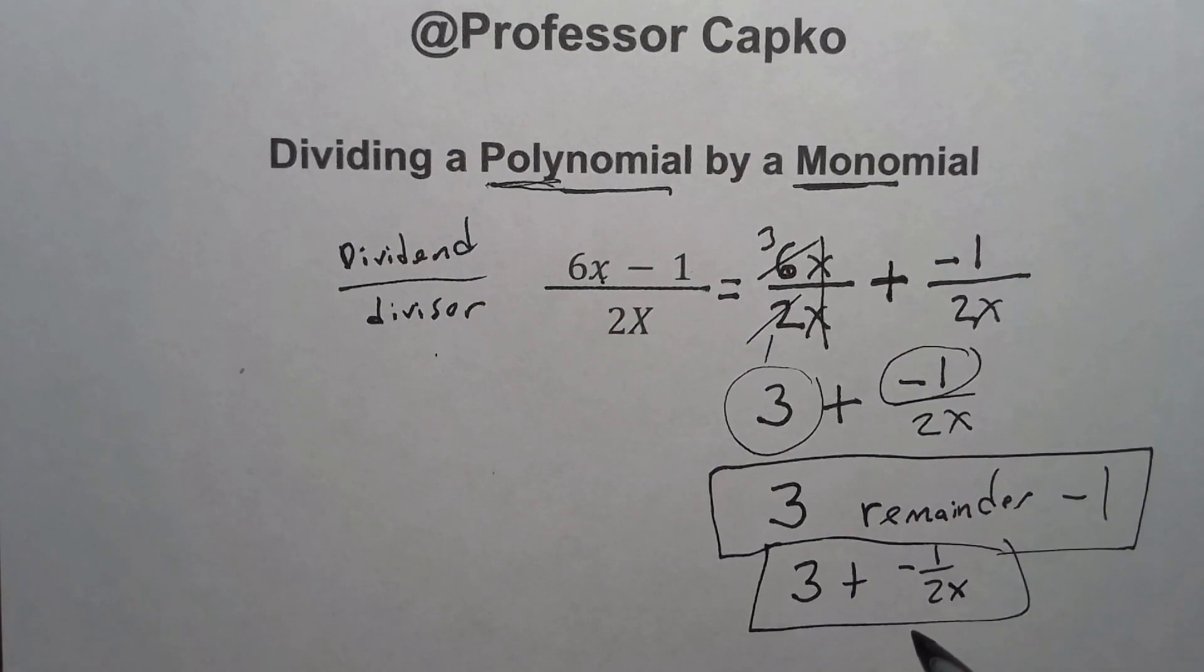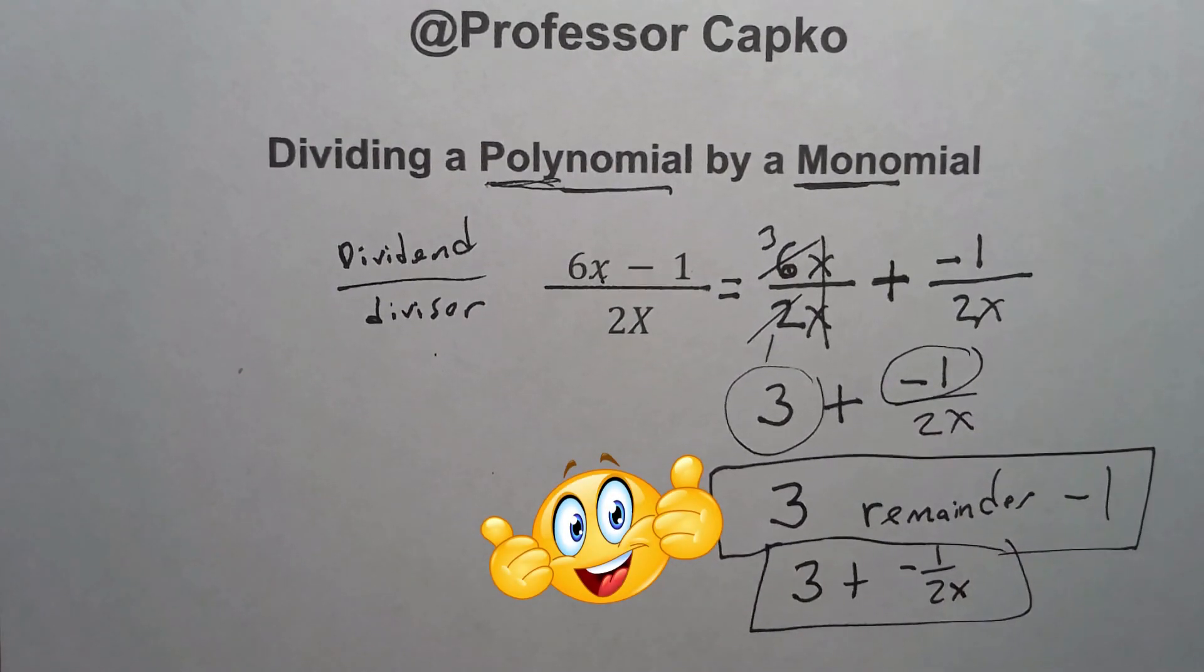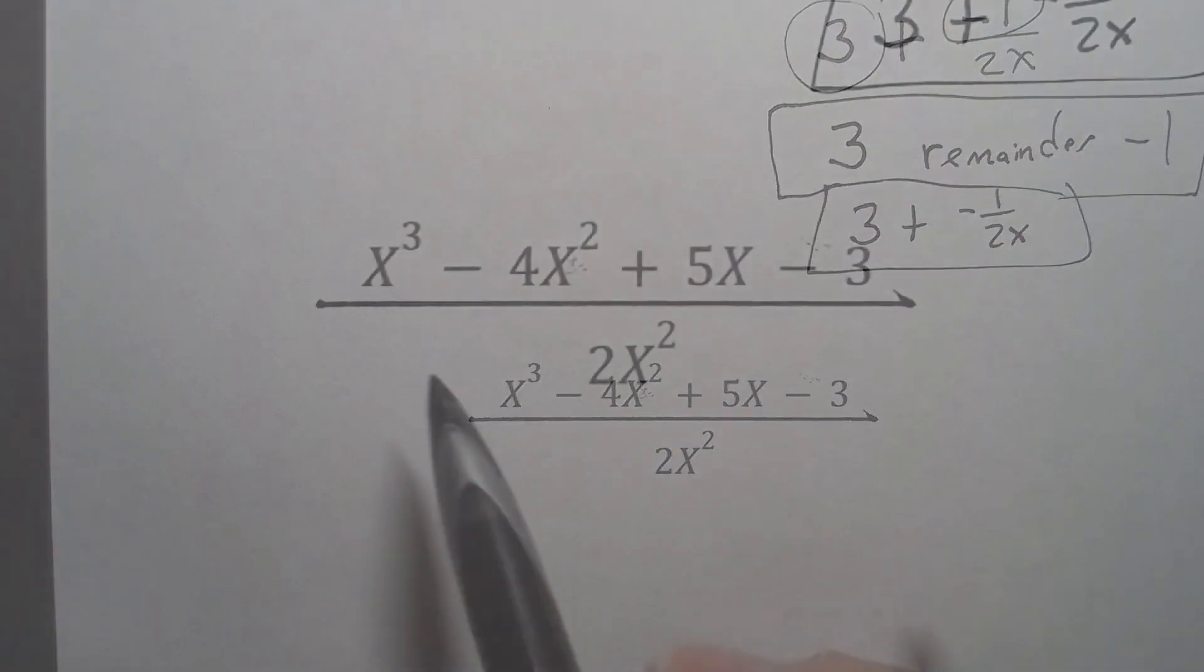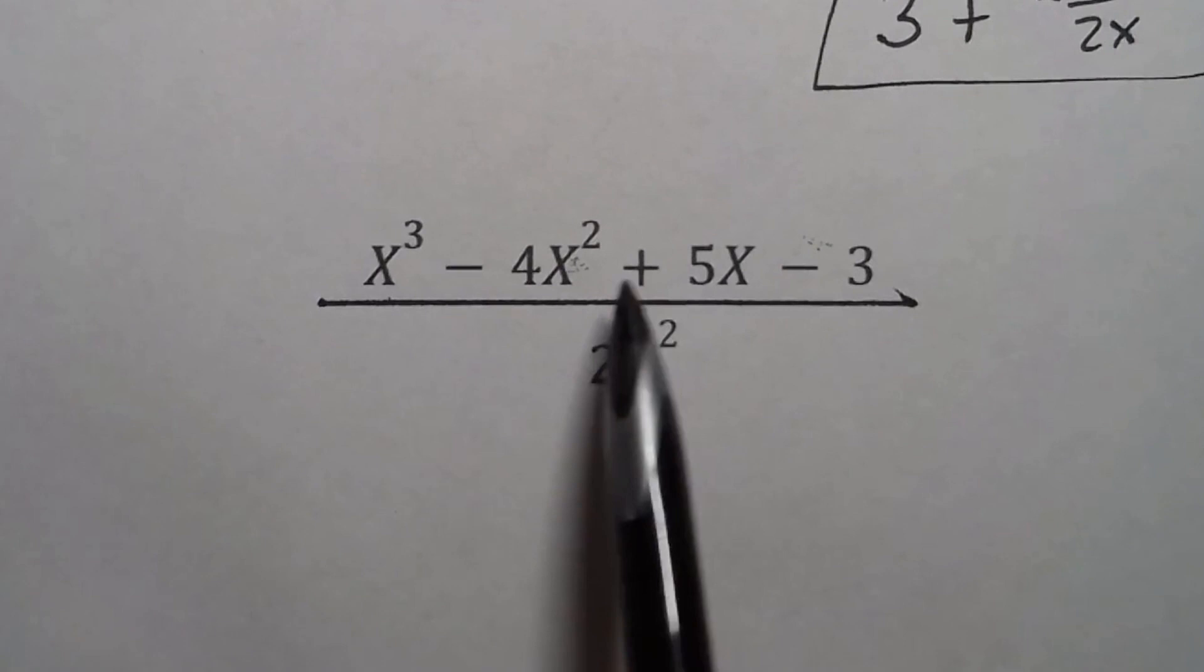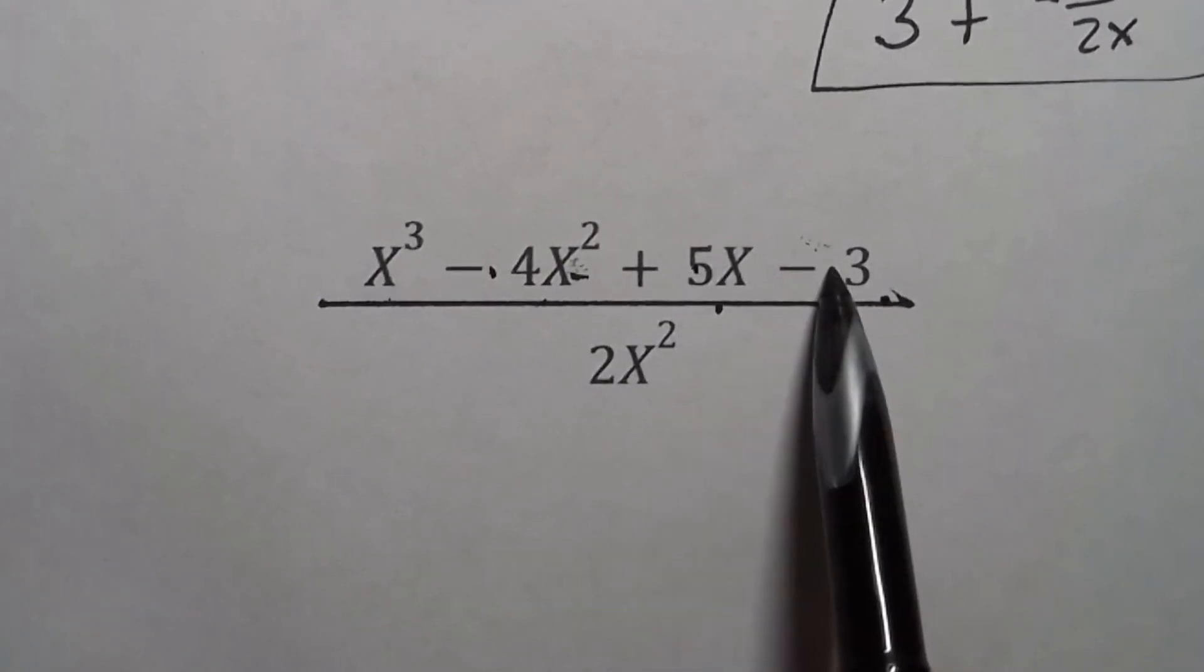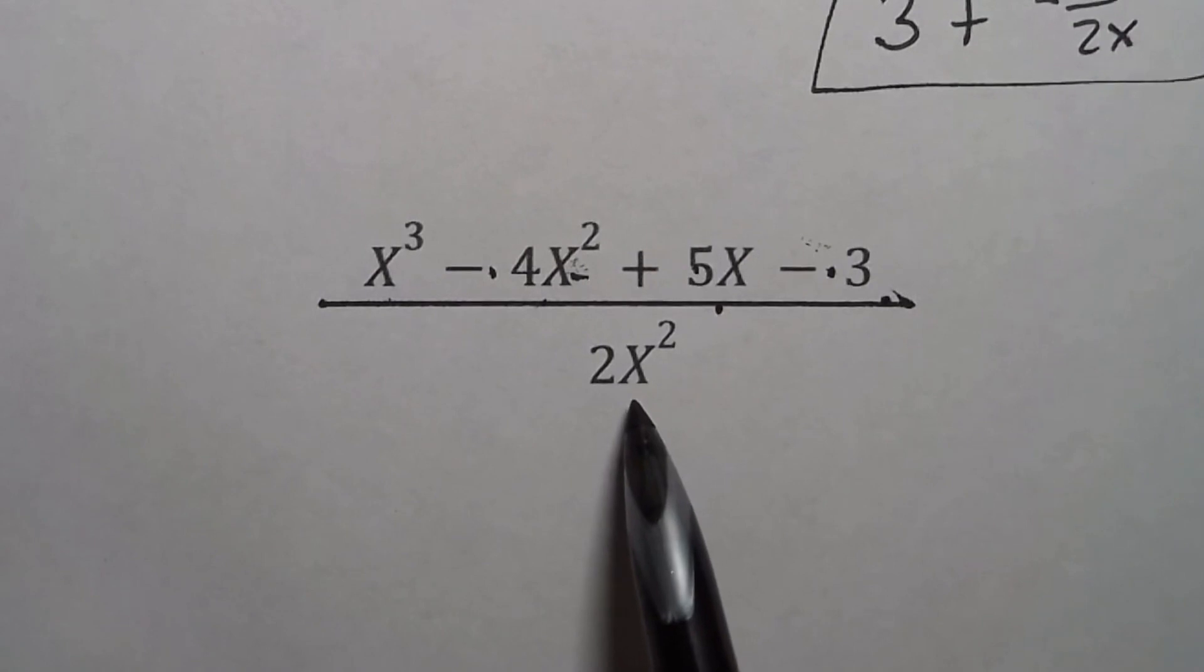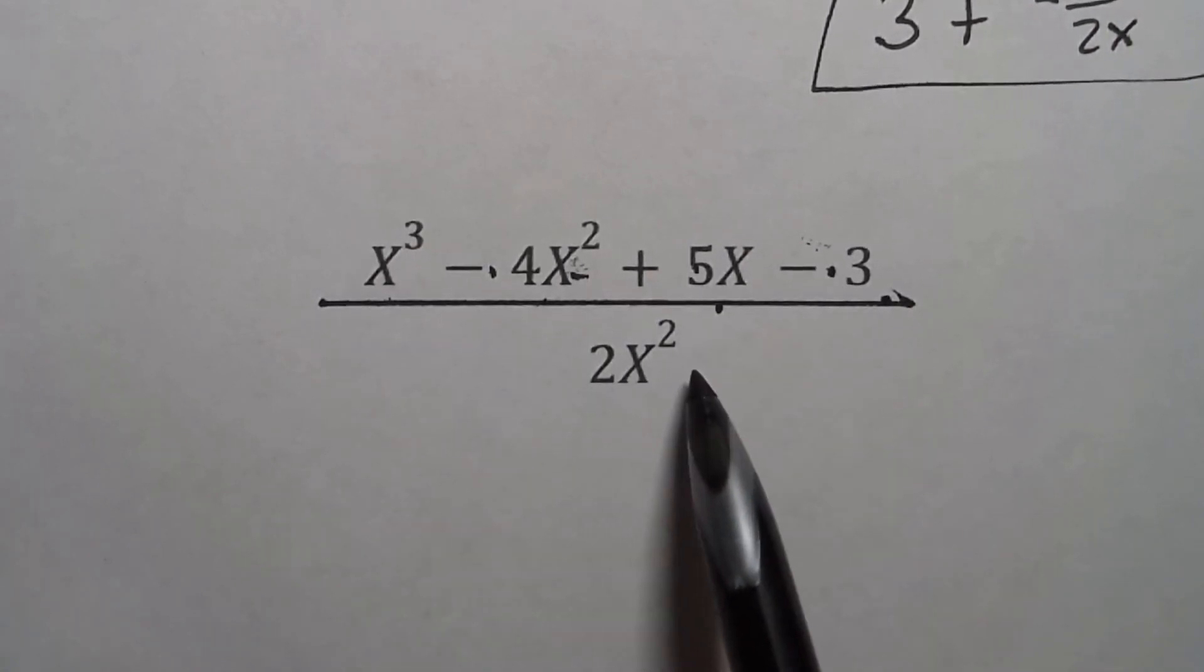If you're finding this type of material helpful, please give us a thumbs up. Let's take a look at the next problem. This is truly a polynomial because there are many terms up here: this is a term, this is a term, this is a term, and that's a term - one, two, three, four terms separated out by addition and subtraction. But yet on the bottom I still have just one term, so this is a monomial.